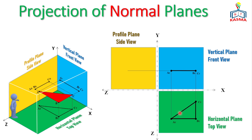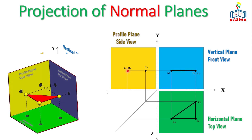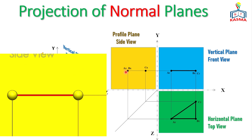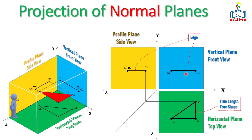Connecting the top view points gives a triangular shape. When projected onto the profile plane, projections of A and B are aligned, while C appears separately — forming an edge. On the front view and side view we get edges, and on the top view we get the true length and true shape of the object. The overall true shape of the plane is projected in the top view, while the other views show edges.